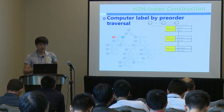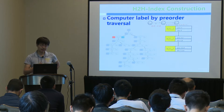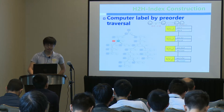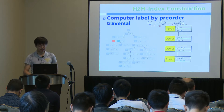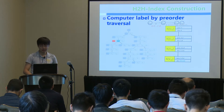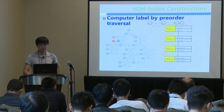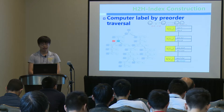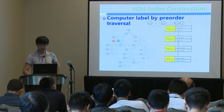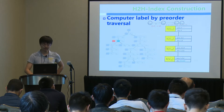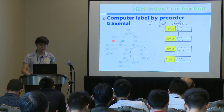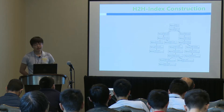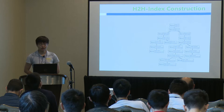We transfer the intermediate vertex result as the label of V18. Continuing the pre-order traversal to vertex V6, we choose V18 as the intermediate vertex and also V14 as the intermediate vertex. By this approach, we construct our H2H index.